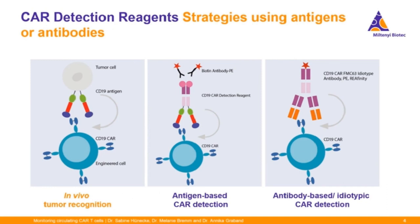There are different suitable strategies for CAR detection, for example antigen-based or antibody-based idiotypic CAR detection. The principle of antigen-based CAR detection is very similar to in vivo tumor recognition. Our antigen-based CAR detection reagents consist of the CAR target protein, for example CD19, fused with a biotin-labeled mutated FC backbone eliminating background signal. The target protein is bound by the CAR receptor and can be readily identified using fluorochrome-labeled biotin antibodies. This approach multiplies the signal and increases assay sensitivity compared to fluorochrome-labeled proteins.